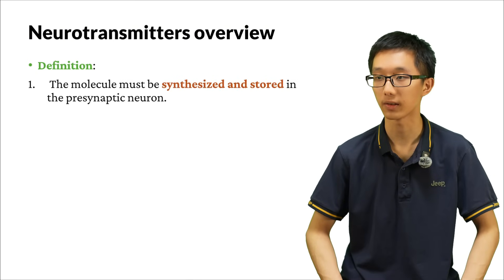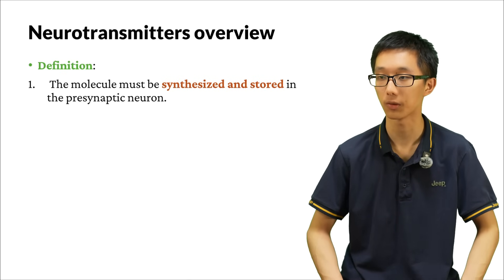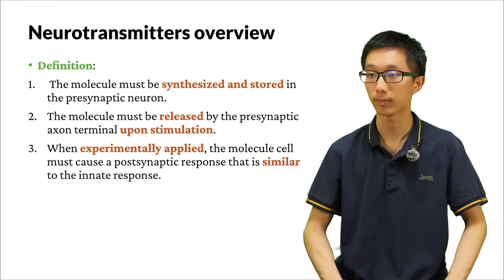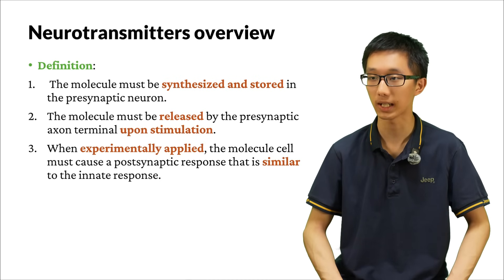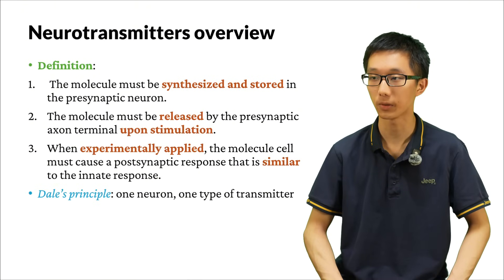What is a neurotransmitter? It must satisfy three conditions. Firstly, the molecule must be synthesized and stored in the presynaptic neuron. Secondly, it must be released by the presynaptic axon terminal upon stimulation. And the third condition is that when experimentally applied, the molecule must cause a postsynaptic response that is similar to the innate response. Usually, we say that one neuron only has one type of neurotransmitter — this is called Dale's principle.